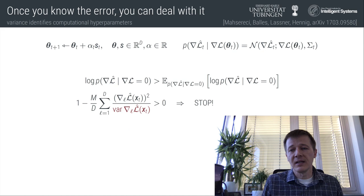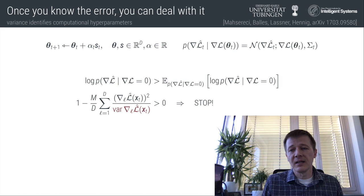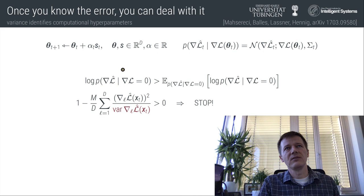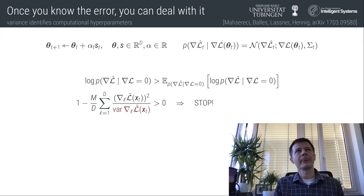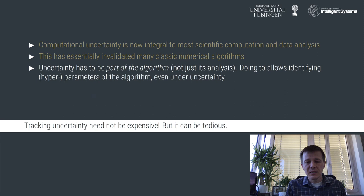You can also do statistical tests to decide whether your algorithm has converged or not. If you have access to sigma, you can construct something like a t-test to decide whether your algorithm now sees gradients that come from a zero-mean Gaussian — and when this happens, you can decide to stop. These are ways of actually leveraging uncertainty explicitly by describing it inside the algorithm, which means there's a new quantity — this variance — that enters the flow of the algorithm and has to be computed.